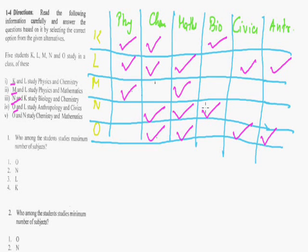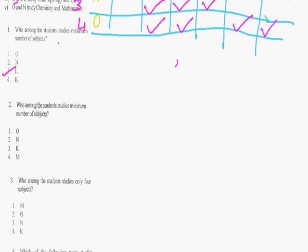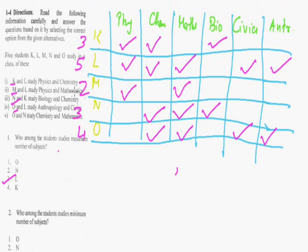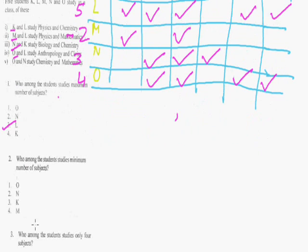Now solving the questions with the help of this chart. Who among the following students studies maximum number of subjects? K is going for 3 subjects, L is studying 5 subjects. M is studying 2 subjects, N is studying 5 subjects. Here we can see that M is studying minimum number of 2 subjects. So the answer for this is M.